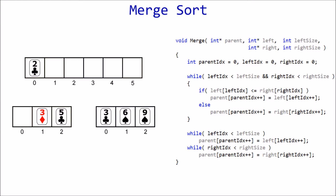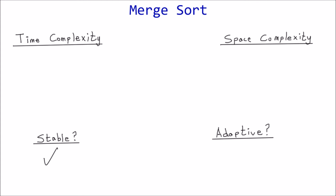Stability: as long as the merge function is implemented correctly, merge sort is a stable algorithm. The key is using the less than or equal operator in the comparison statement, so even if the compared values are equal, the one on the left is moved first, maintaining the left-to-right ordering.